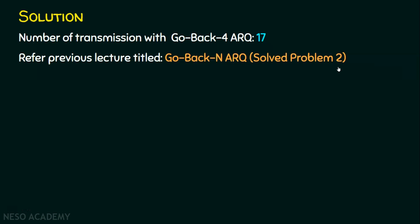In that solved problem 2, I used a shortcut method. If you want to know the formal way of solving this problem, you can see my lecture 'Go Back N ARQ Solved Problem 1.' So we are very clear that the number of transmissions with Go Back N ARQ is 17, because the entire window of frames is going to be retransmitted, meaning the number of transmissions will be high.